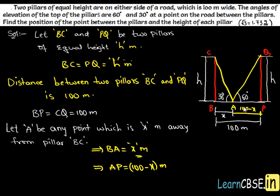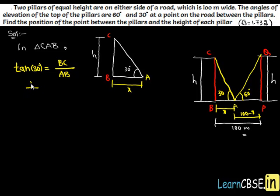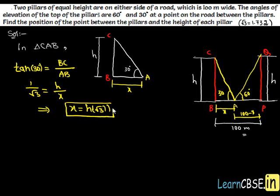Consider triangle CAB. Here BC is the perpendicular and AB is the base. We consider the tangent ratio: tan of 30 degrees equals perpendicular over base, which is BC over AB. Substituting, tan 30 degrees is 1 over root 3, BC is H meters, and AB is X meters. By cross multiplication, we get X equal to H times root 3.